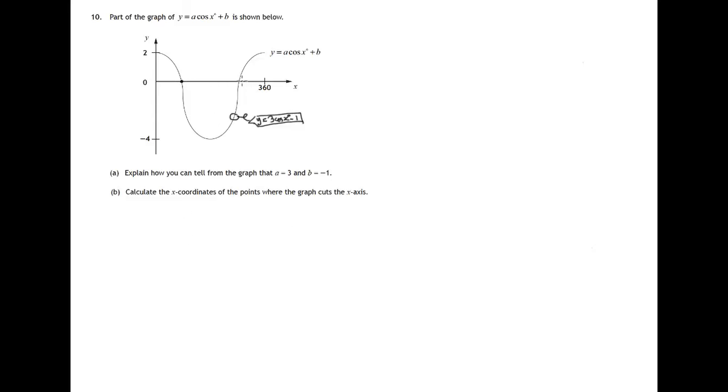Where this graph crosses the x-axis, 3 cos x minus 1 must have a value of 0. The y-coordinate is 0, y will equal 0. So to do this we must solve 3 cos x minus 1 equals 0.